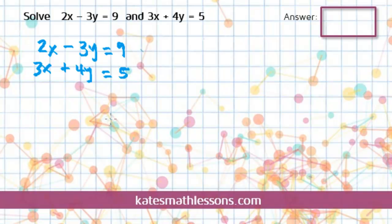The goal with elimination is to get one of the variables to cancel out to eliminate one of them. So if we look at the system that we have here, if I add these two together, if I added these, I would get 5x's. If I added these, I would get a positive 1y, and then this would be 14.